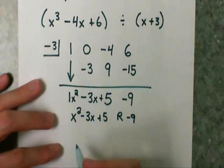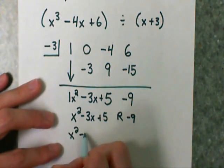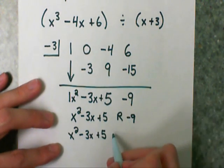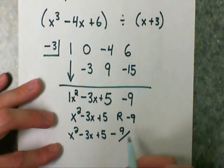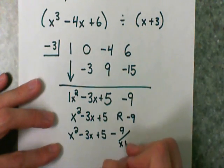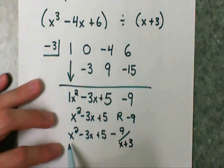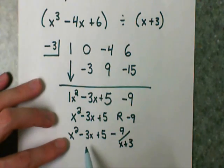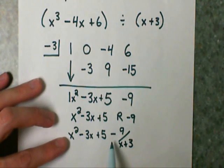I could write it as its own term. So I'd have my x squared minus 3x plus 5. And I'm going to place my remainder over what I was dividing by. I was dividing by x plus 3. So my answer is x squared minus 3x plus 5 minus 9 over x plus 3.